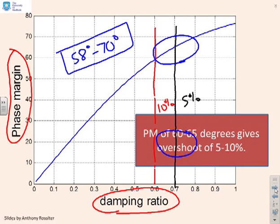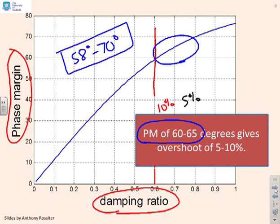A phase margin of 60 to 65 degrees will give an overshoot of 5 to 10% for this classic second-order system. This is where your target phase margin of about 60 degrees has come from.